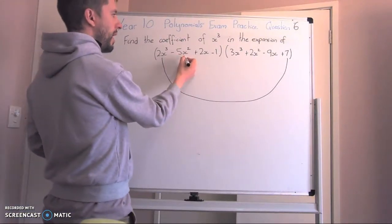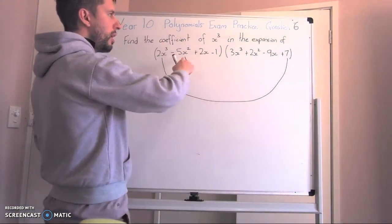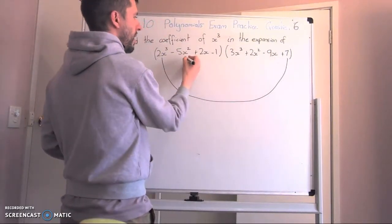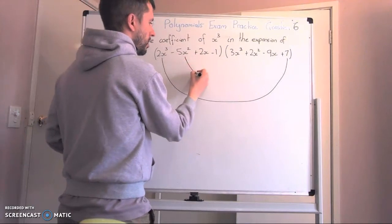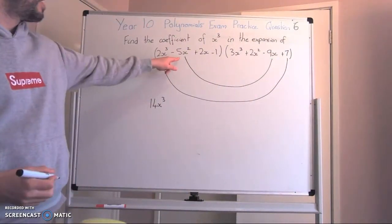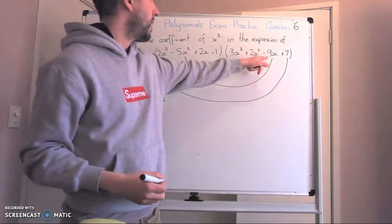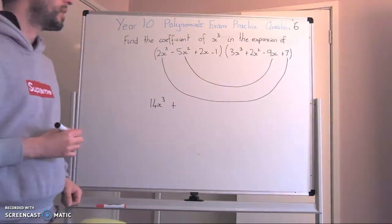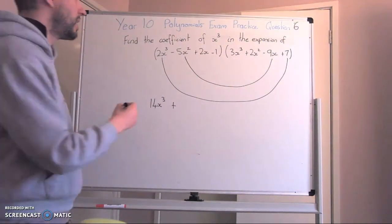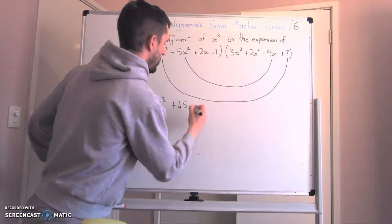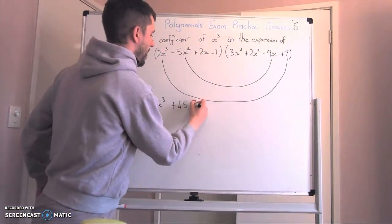If I look at this x², the only thing it will get to the x³ is when I times it with something that has 1x. So -5x² times negative... A negative and a negative is a positive. 5 times 9 is 45, so we've got 45x³.